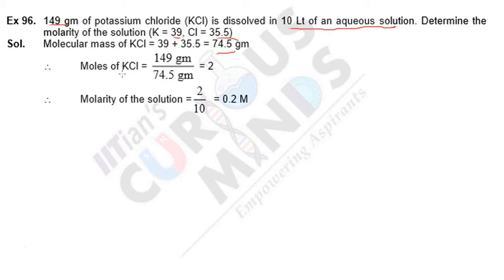What is the moles of KCl? Mass is 149 grams divided by molar mass 74.5 gives 2 moles. So 2 moles are there in 10 liter solution. How much is in 1 liter?